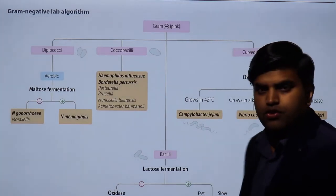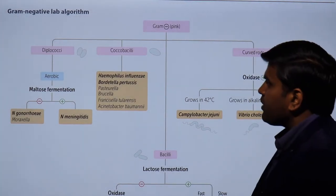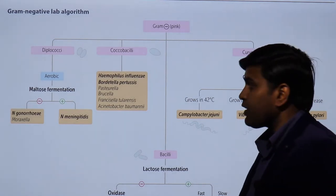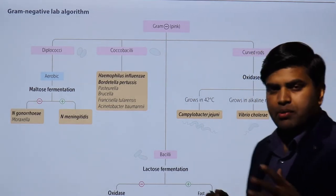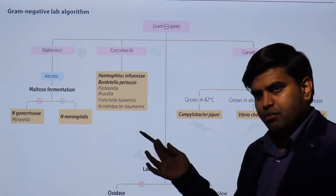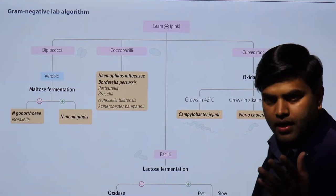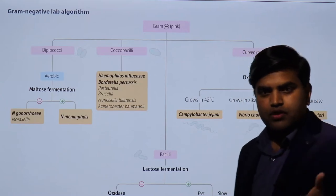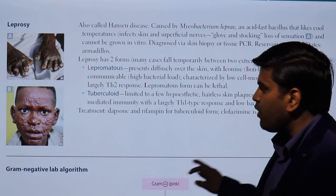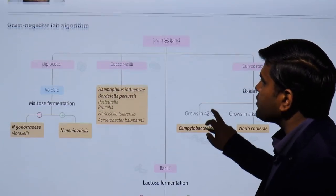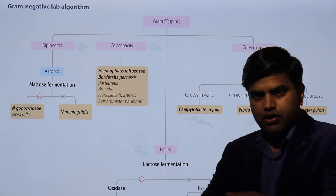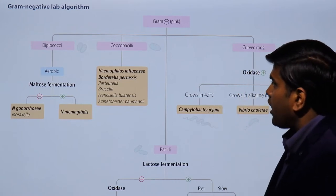Hello and welcome again. Today we are moving forward on page 140, USMLE Step 1 2021, microbiological section. We have previously discussed gram-positive cocci and bacilli, and mycobacterium leprae. Now we will continue our lecture on the gram-negative laboratory algorithm — that is gram-negative cocci and bacilli.